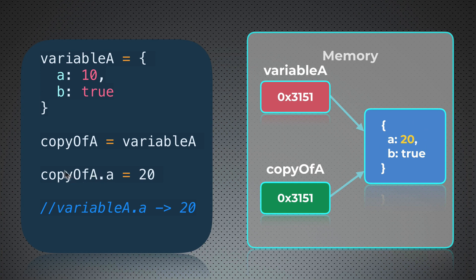So, in this example, if I change value of one of the properties in this object, it will be changed only in this place in memory. Pointers will not change. That's why if I will try to access property a of variable A, I will get 20, because this value in the memory was updated. And it doesn't matter which pointer was used to perform this action. It was changed only in one place.